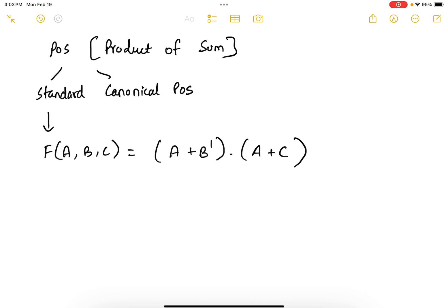So to convert it to a canonical POS form, we know that this is missing the c term and this is missing the b term. So we write f of a, b, c equals a plus b prime plus c times c prime. This is basically a zero, so there is no harm done. And we have a plus c plus b times b prime, which is another zero here.